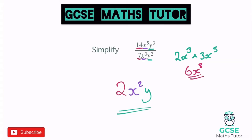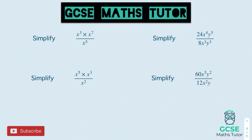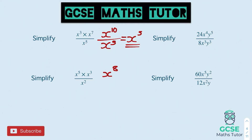Here are the practice question answers. For the first one, tidy up the top by adding powers to get x to the power of 10, divided by x to the power of 5. Subtracting gives x to the power of 5 as the final answer. For the second one, adding powers on top gives x to the power of 8, divided by x squared. Subtracting gives x to the power of 6.